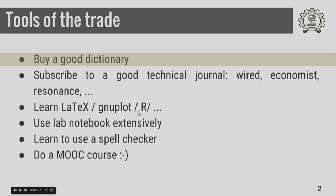As with every trade, technical writing has its own tools and they are very important. To be a good technical writer, you should have mastery over some of these tools. The first thing you should have is a good dictionary, and it is a very good habit to keep referring to a dictionary. It is generally said that if you are not using a dictionary, that means you are not reading at your reading level.